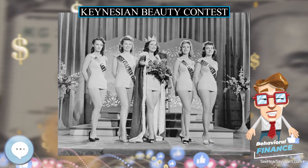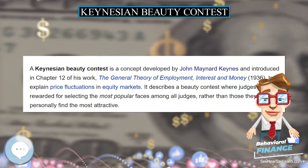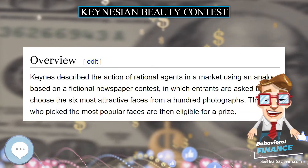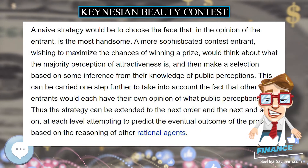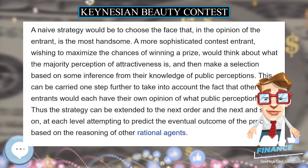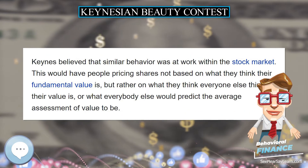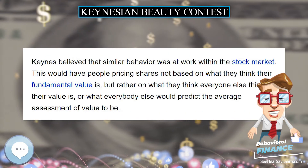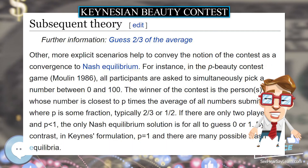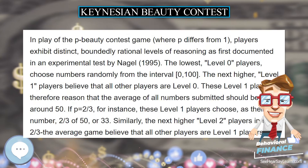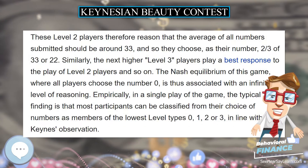Other, more explicit scenarios help to convey the notion of the contest as a convergence to Nash equilibrium. For instance, in the P-Beauty contest game (Moulin, 1986), all participants are asked to simultaneously pick a number between 0 and 100. The winner of the contest is the person whose number is closest to P times the average of all numbers submitted, where P is some fraction, typically two thirds or half. If there are only two players and P less than 1, the only Nash equilibrium solution is for all to guess 0 or 1. By contrast, in Keynes' formulation, P equals 1 and there are many possible Nash equilibria.